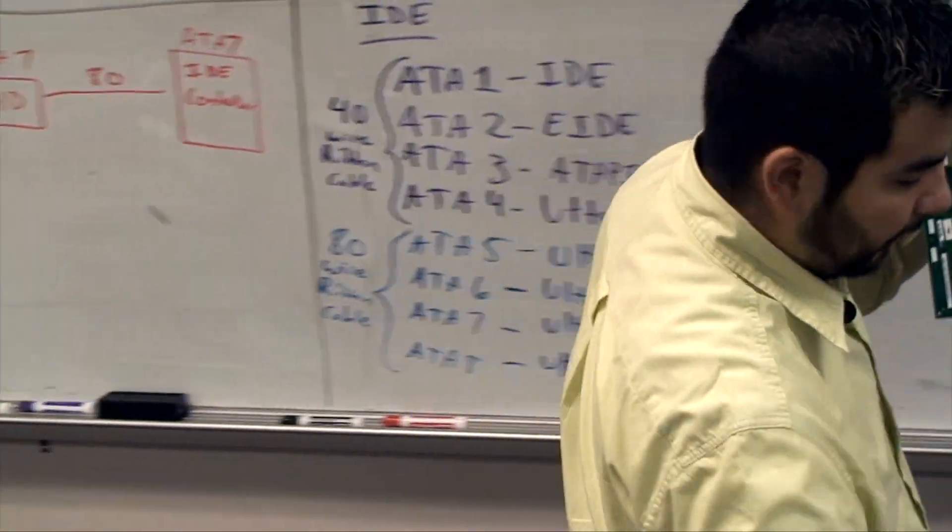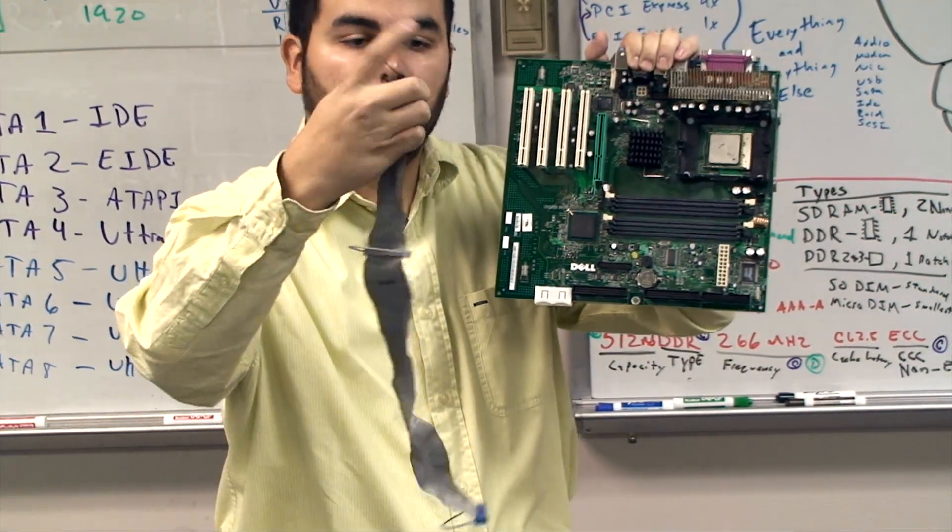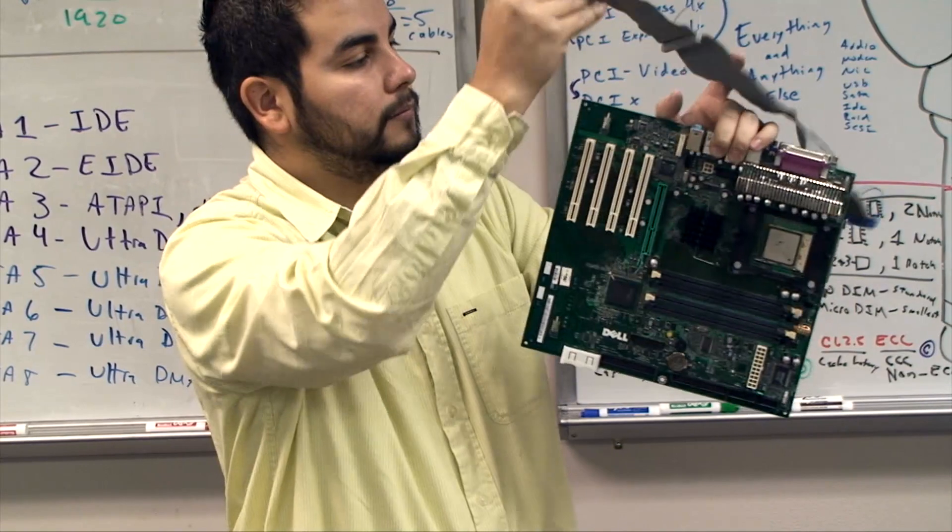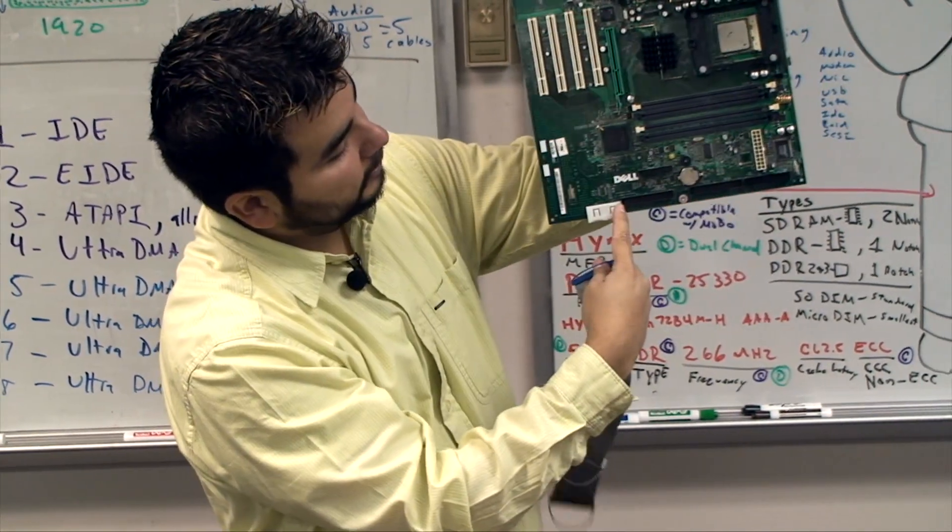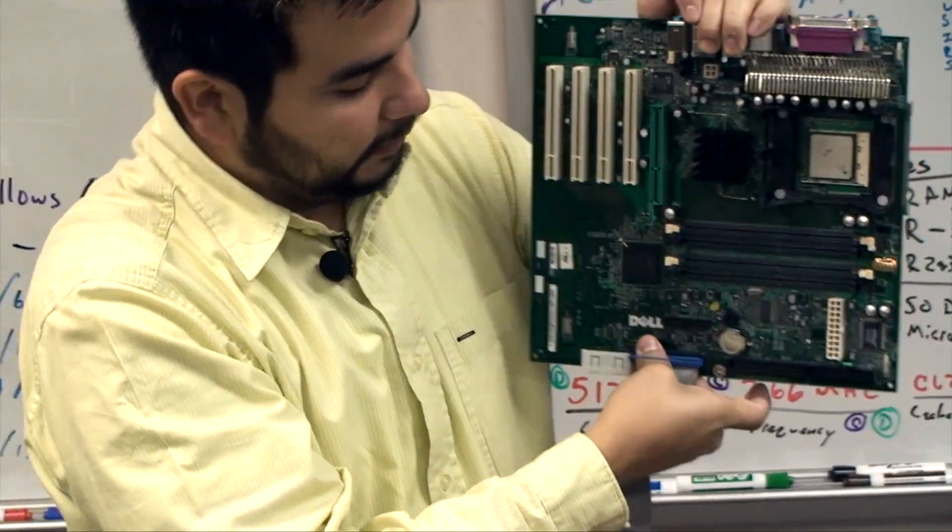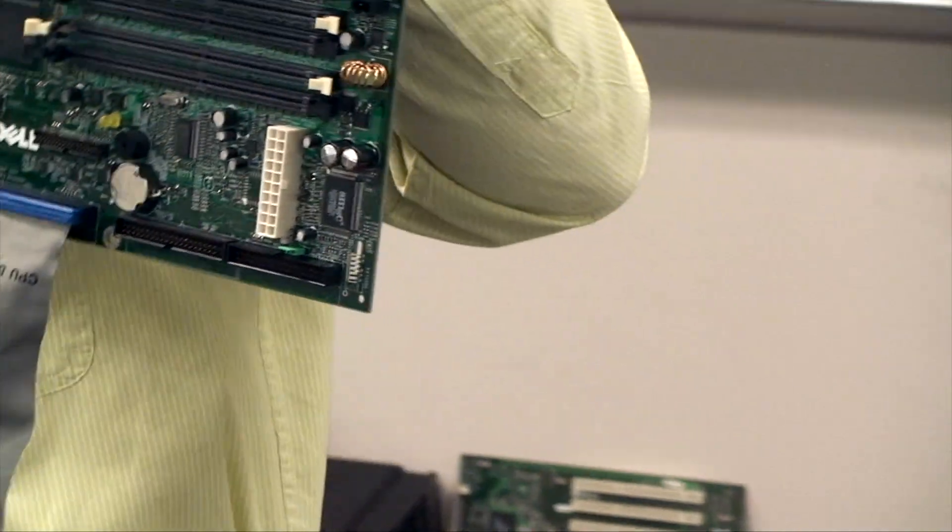So if I find pin 1, pin 1 is on this side. I grab my cable, there's my red wire, so red wire has to be on pin 1. Oh, wrong end. Red wire has to be on pin 1, pin 1 is on this side. I orient it in the correct way and I just push it in all the way. Everybody see that?